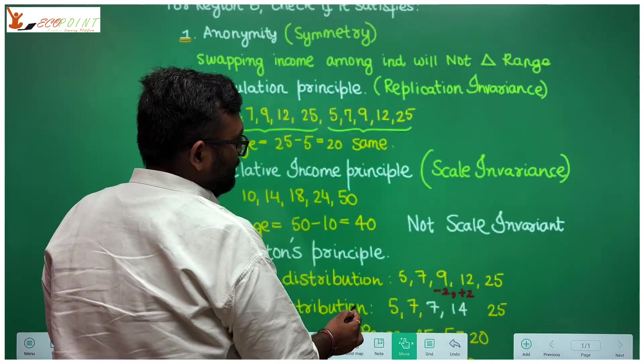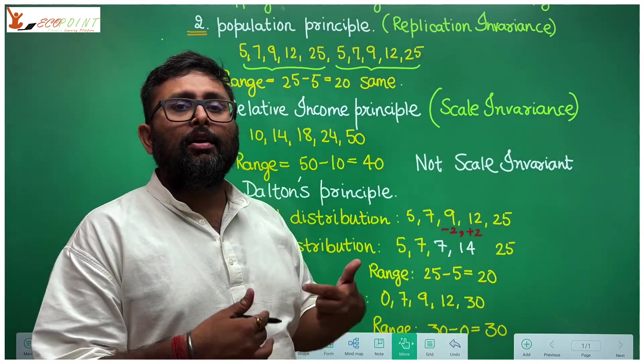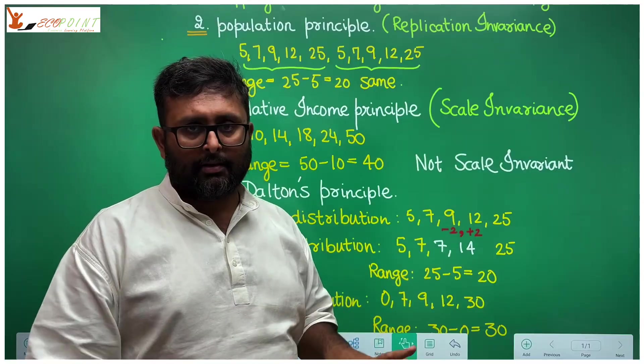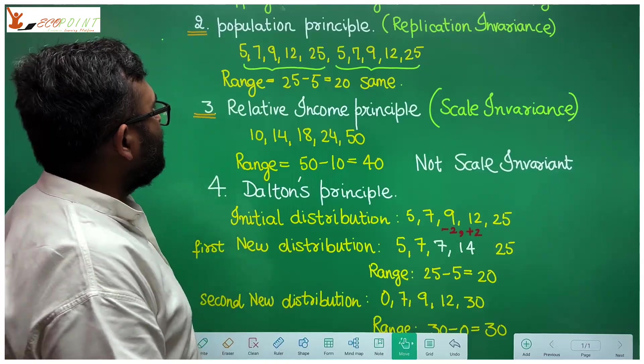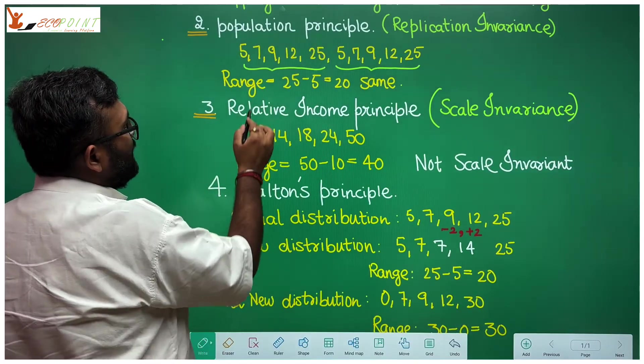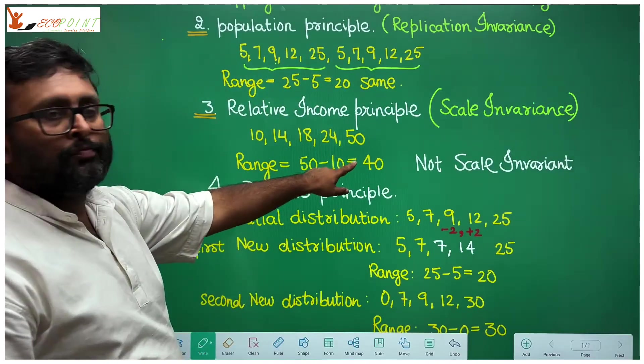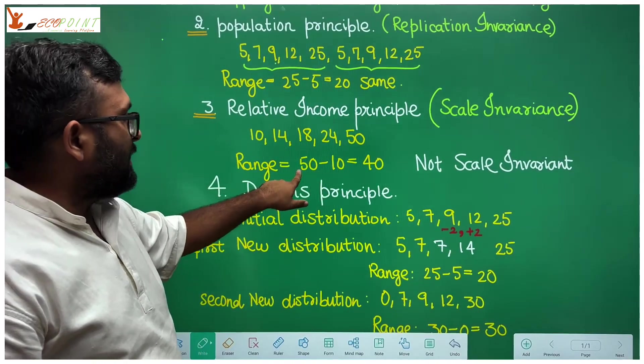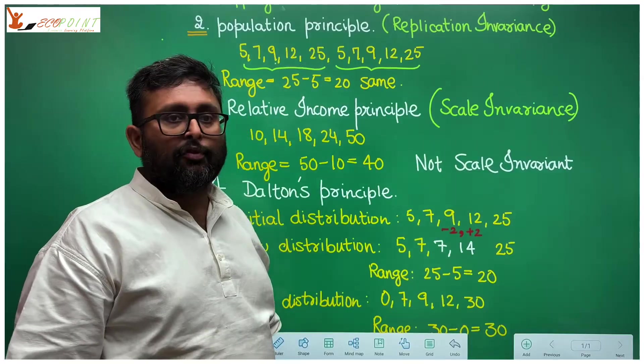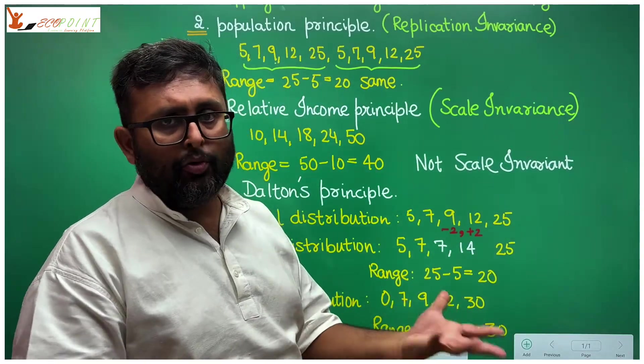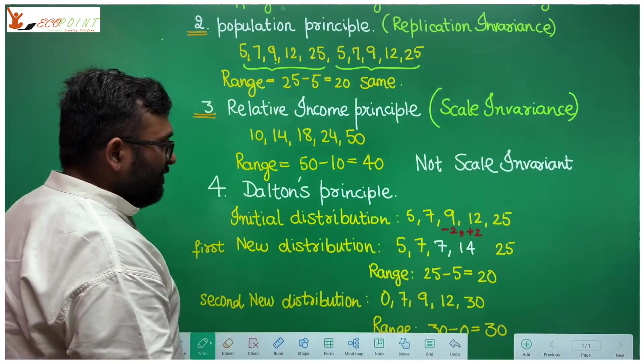Then you have relative income principle. What is relative income principle? Let's say I multiply or divide or add or subtract by the same number, all income. So in this case, we have multiplied the initial distribution of income by 2: 10, 14, 18, 24, 50. So what is the range? Range is maximum minus minimum, that is 40. Earlier range was 20. Now range is 40. So is it scale invariant? No, it is not. So is it satisfying relative income principle? No, it is not.